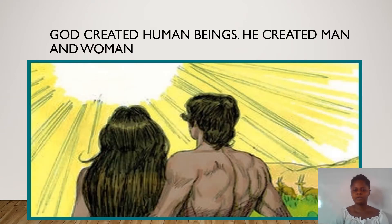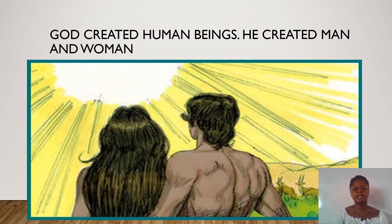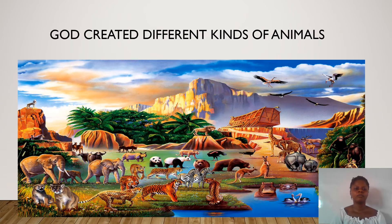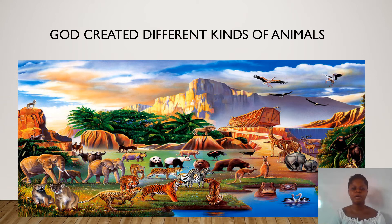God created human beings — he created a man and a woman. In the picture below you can see the man and the woman who were created by God. God also created different kinds of animals. In the picture below you see flying animals, swimming animals, and animals on land.